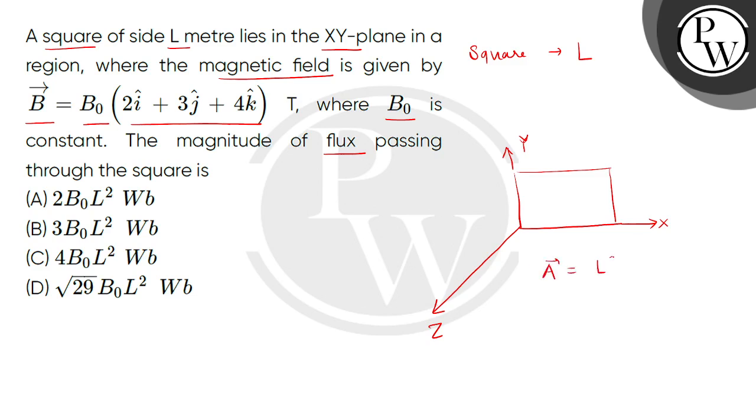The area vector is L² k̂, where k̂ is a unit vector along z axis, î is a unit vector along x axis, and ĵ is a unit vector along y axis.